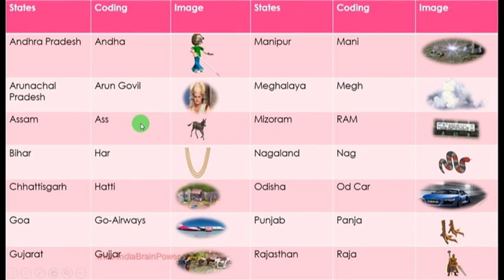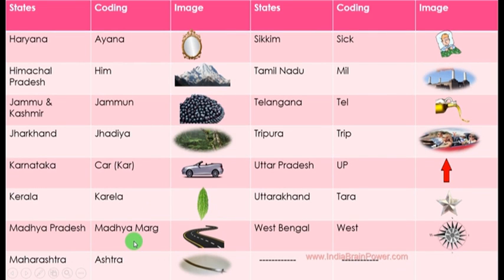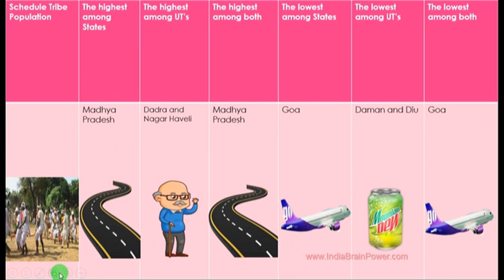Let us start learning the codes or keywords for all states and Union Territories. Goa — code: 'Goa Aways'; Madhya Pradesh — code: 'Madhya/Magh'; Dadra and Nagar Haveli — code: 'Dada' (grandfather dominant).